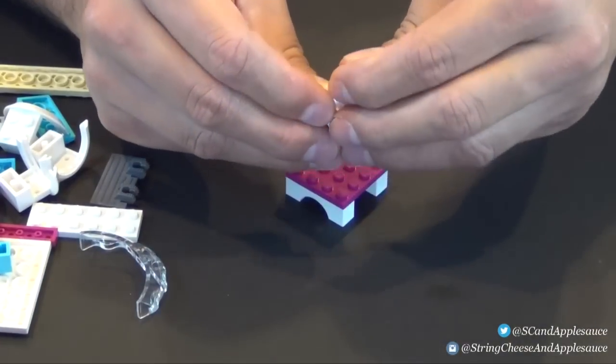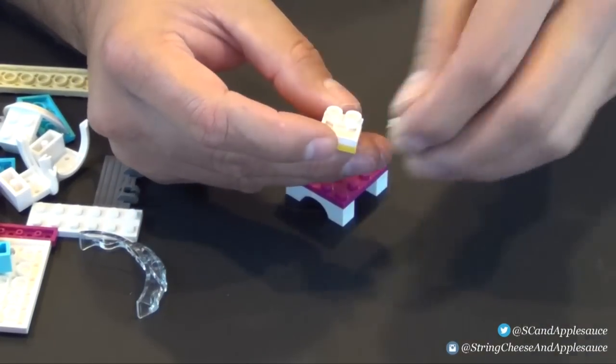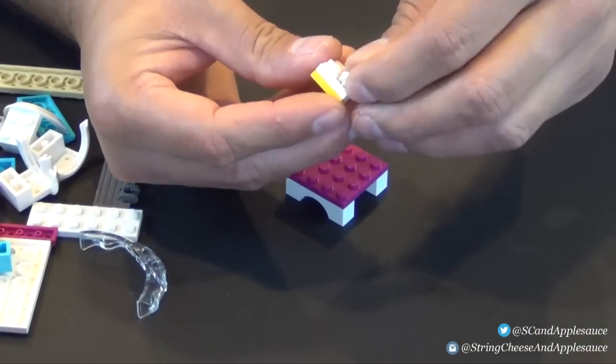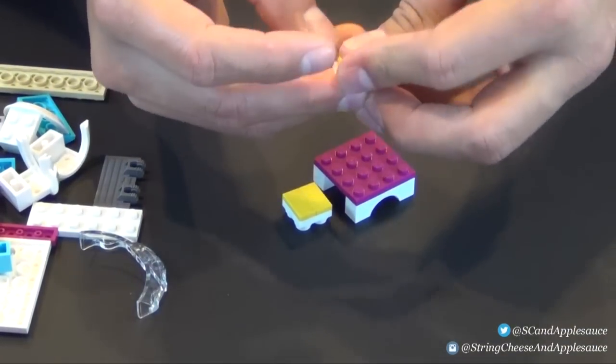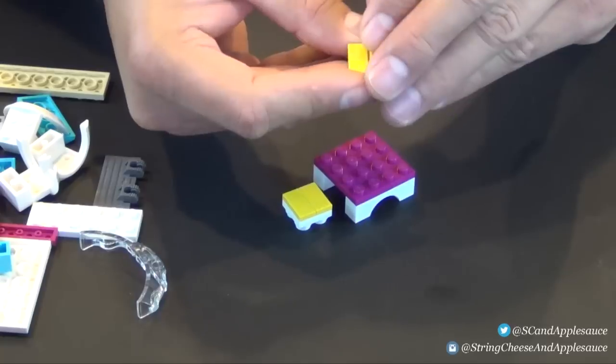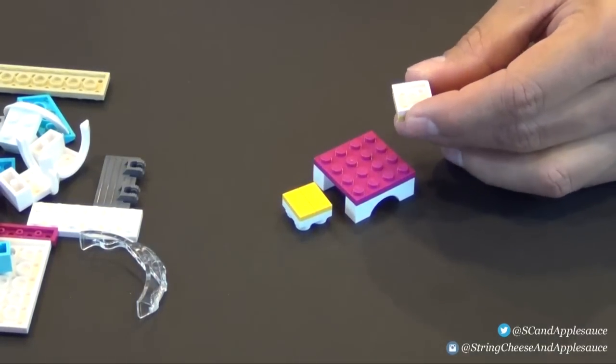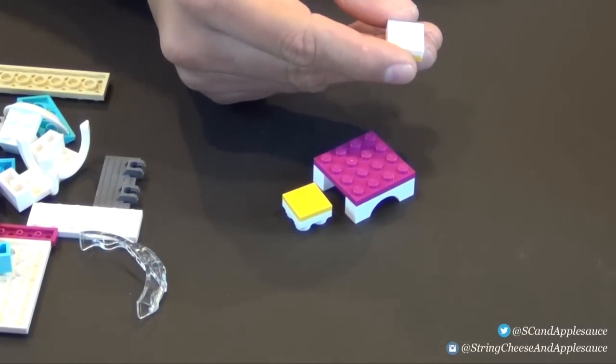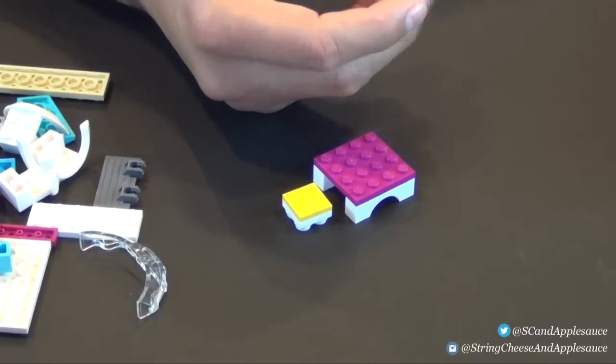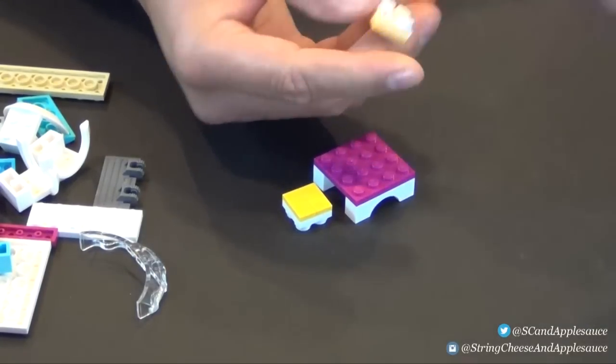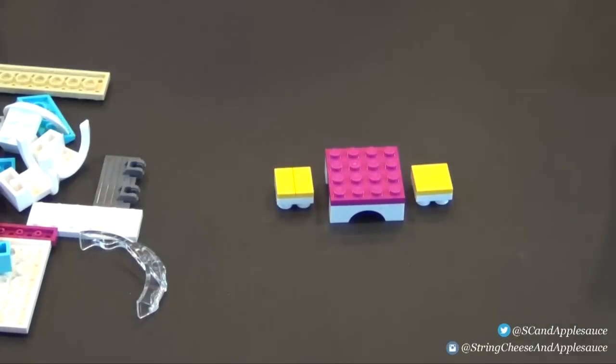Next is a little picnic table. It's real basic, we basically have these two arched bricks with a four by four dark purple plate on top of them. For our seats we have this two by two plate with some yellow tiles on top and then underneath there we put four white round studs.